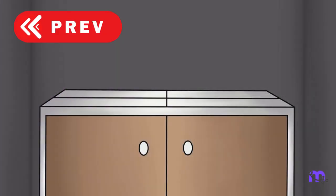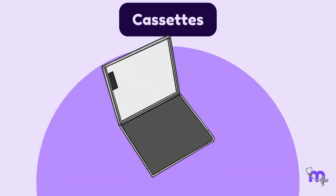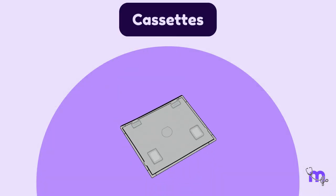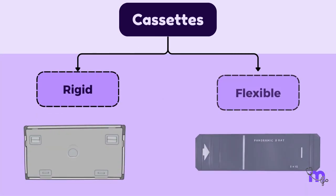In our previous video of the darkroom, we mentioned an allocated area to load and unload cassettes. They are containers into which extraoral films are loaded before exposure. They are available in two forms: rigid and flexible.